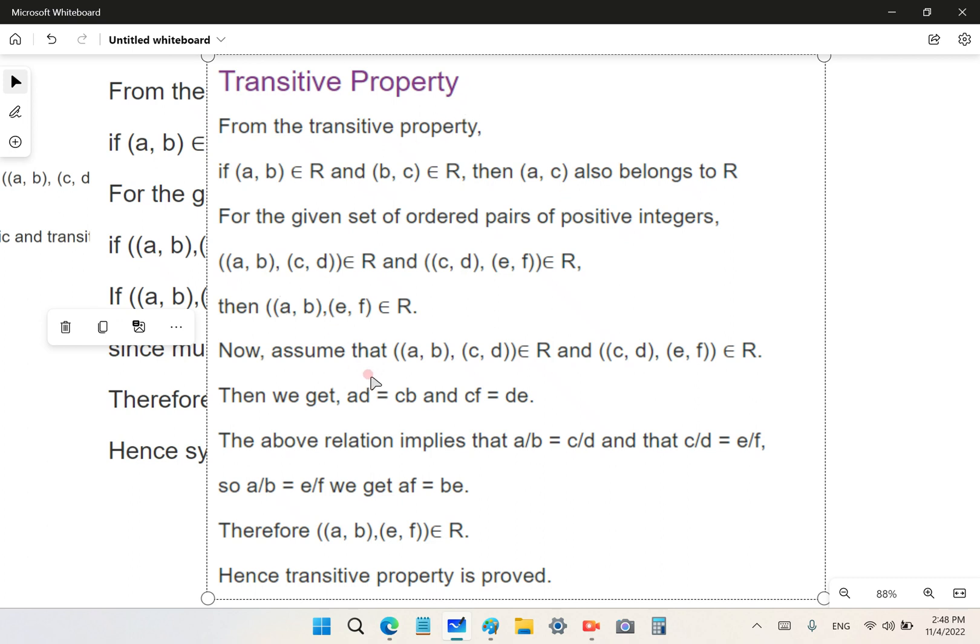And the final so-called property is the transitive property. So this one here is slightly more edible, so to speak, but still this here also follows from Euclid's elements, which one of his common notions says if two things are equal to the same thing, then they're equal. So that's the transitive property. And of course, this here is not a proof because it says, if we assume that these are part of R, then we get AD is equal to CB. No, you don't because you assumed that. So you've actually proved nothing.